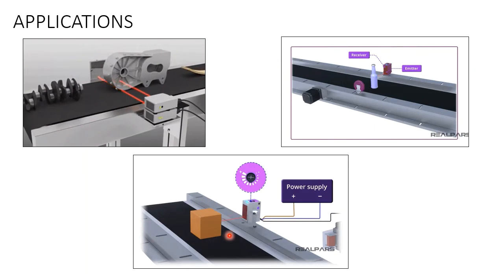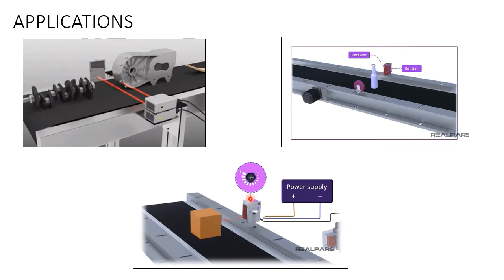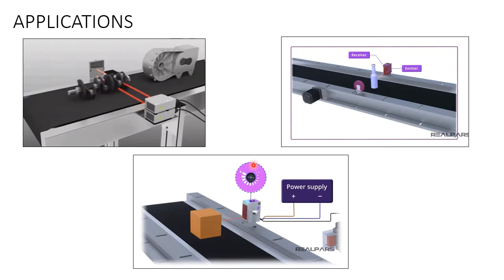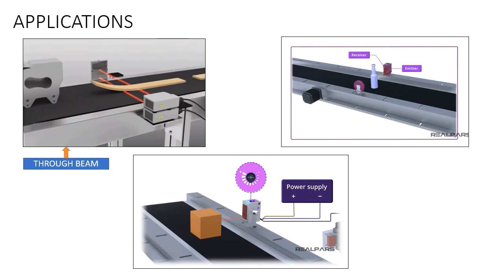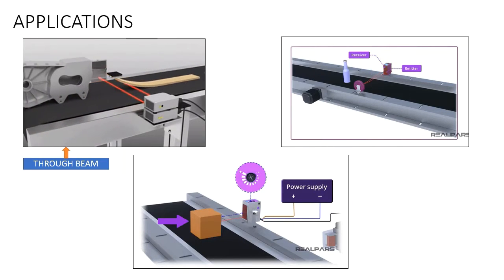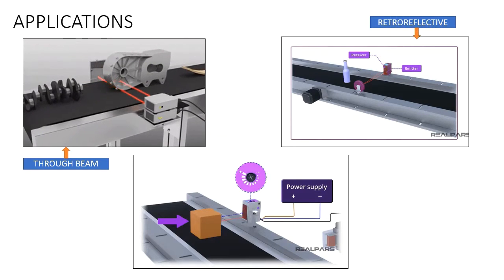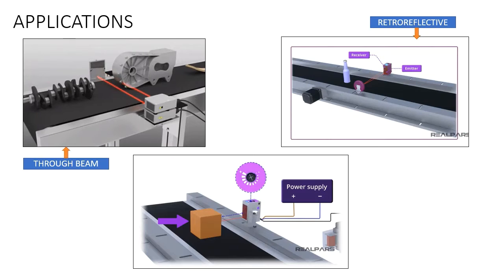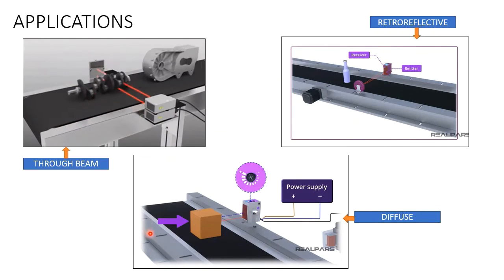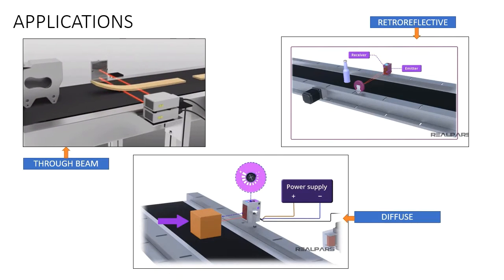In the third application, there is only one sensor and the object placed in front of it gets detected. Now, can you guess which sensor type is used in each case? The first is a through beam sensor — a separate transmitter and receiver with the beam obstructed. The second is retro reflective — emitter and receiver in the same housing with a separate retro reflector. The third is diffuse type — a single sensor with built-in transmitter and receiver, no reflector needed.